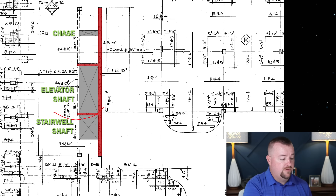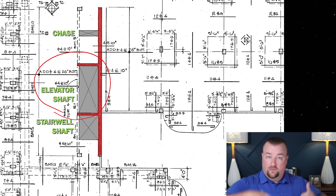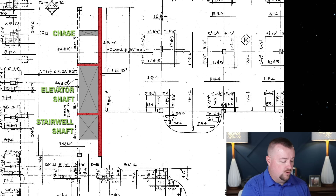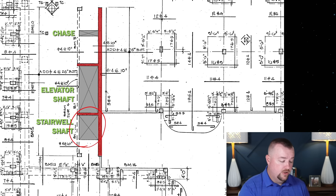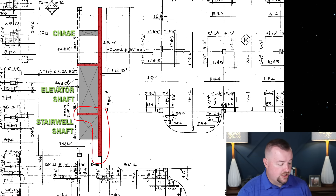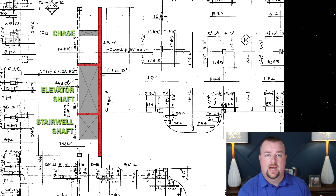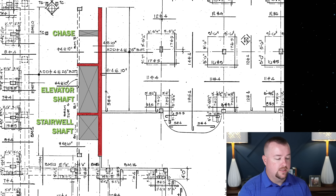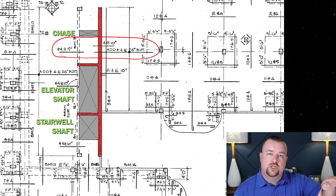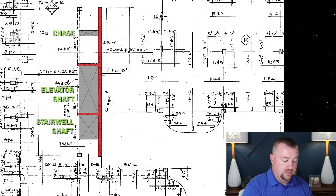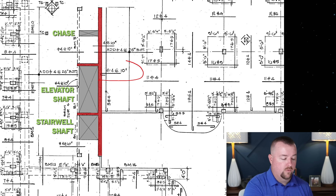If you look at the areas I've shaded gray, these are what we call chases or shafts — areas where there is no slab, a hole straight from bottom to top. The upper chase is for mechanical and electrical equipment running from top to bottom. Then you have the elevator shaft — a giant opening so elevators can obviously go up and down the building. And of course the stairwell shaft. The stair shafts are not typically considered structural, but the shear wall created around them is considered structural.